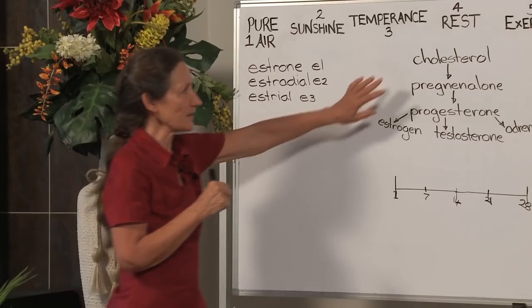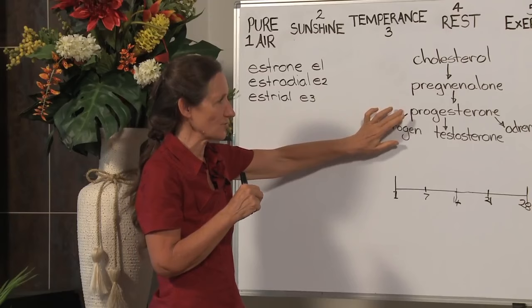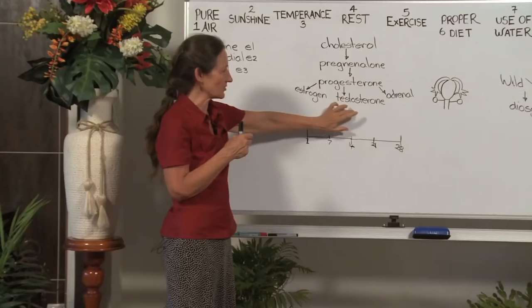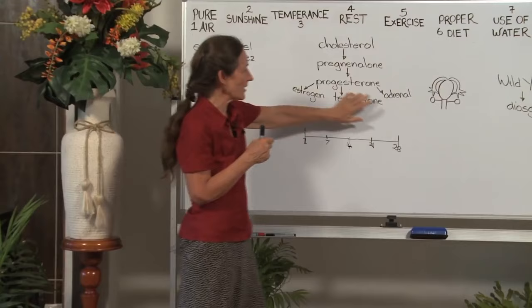From cholesterol the body makes pregnenolone, and from pregnenolone the body makes progesterone. Progesterone is the key hormone because from progesterone estrogen is made, from progesterone testosterone is made, and from progesterone our adrenal hormones are made.